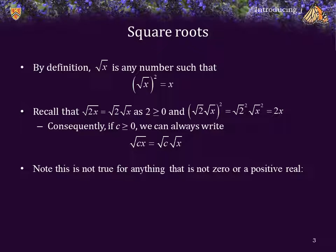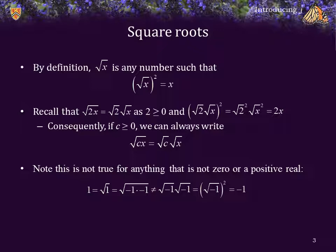For example, consider this: 1 is equal to the square root of 1, but 1 is equal to negative 1 times negative 1. However, the square root of negative 1 times negative 1 is not equal to the square root of negative 1 times the square root of negative 1, which is the square root of negative 1 squared, which should be negative 1. So we can only separate a product under the square root if one of the two terms is positive or 0.